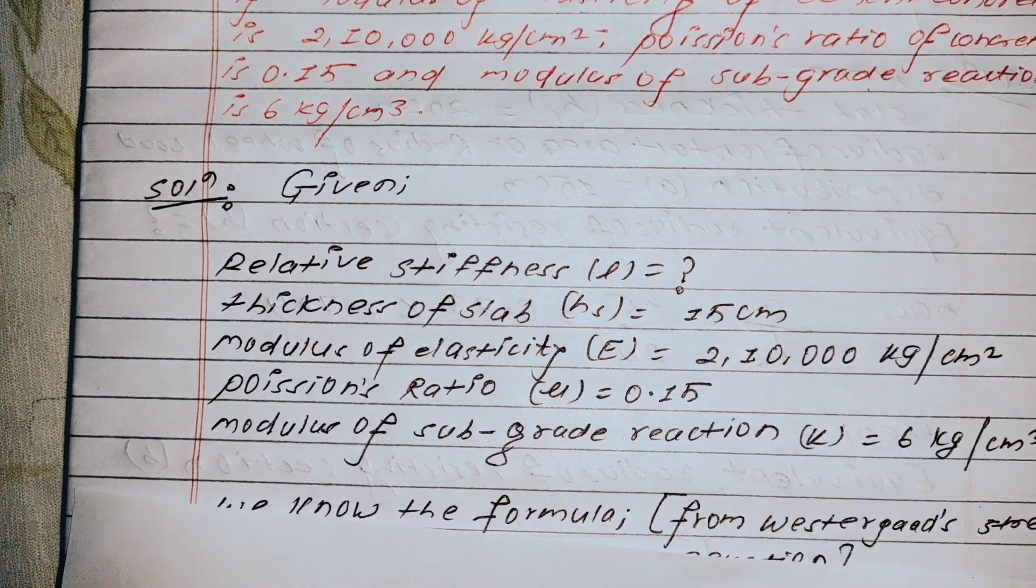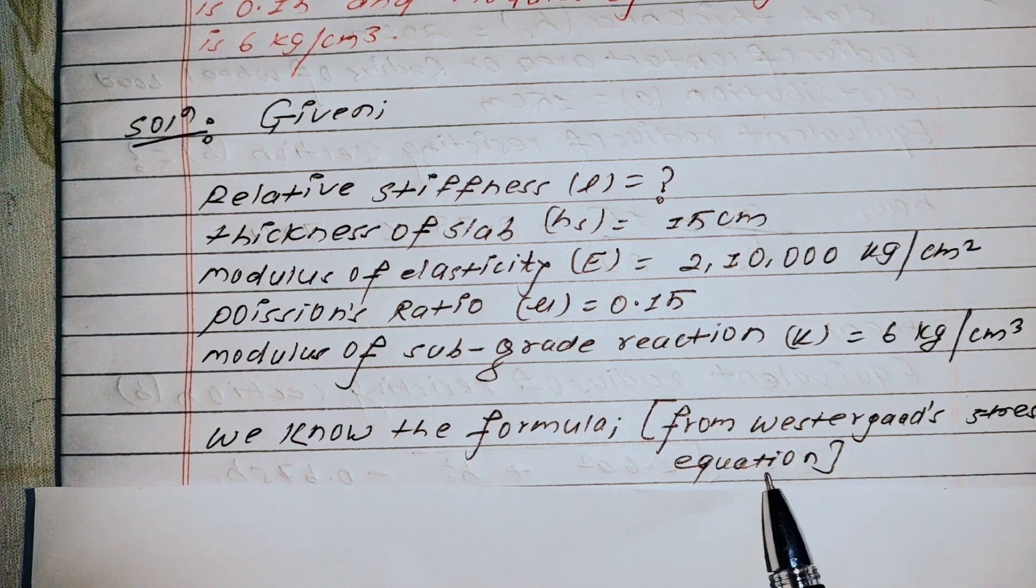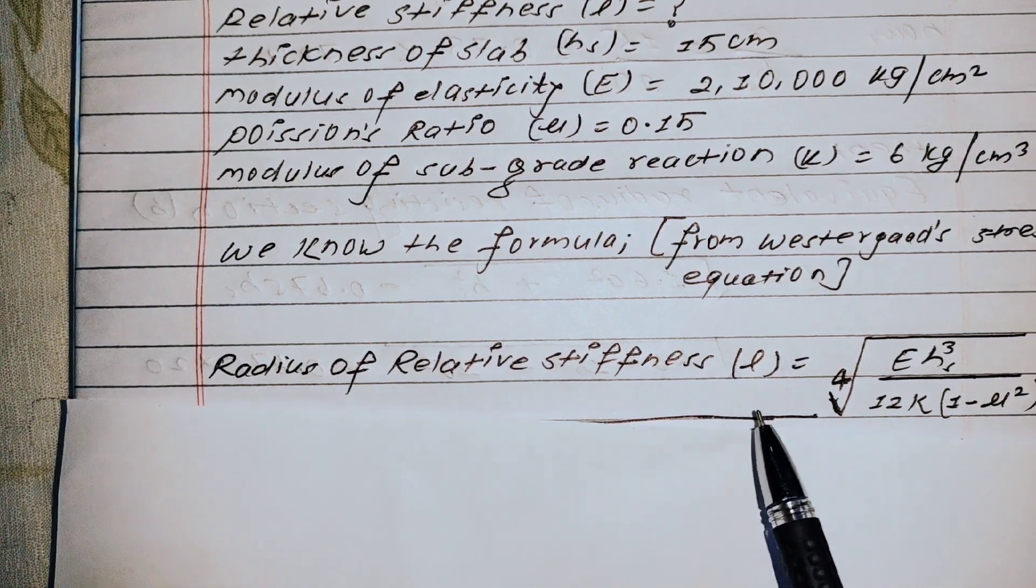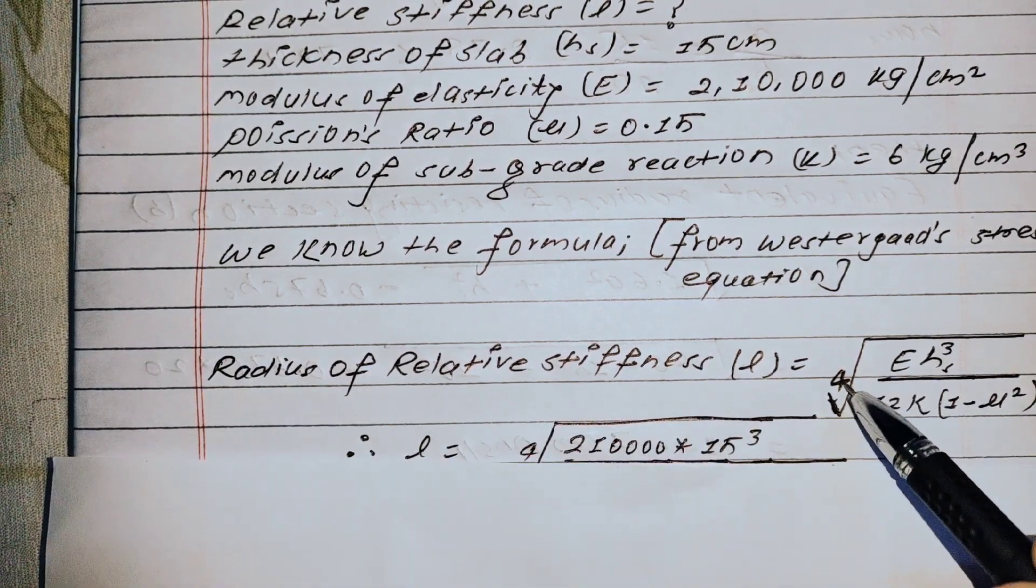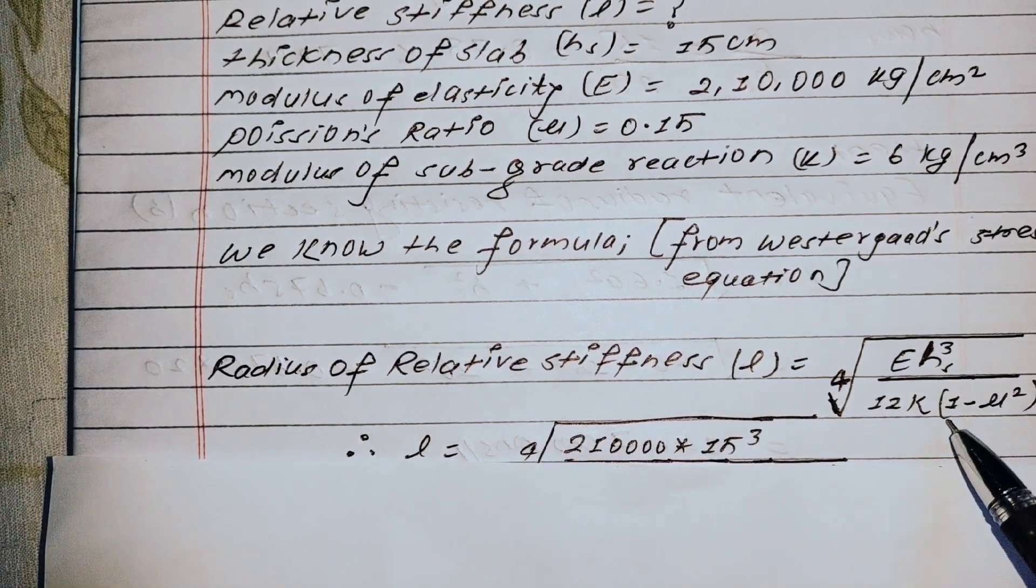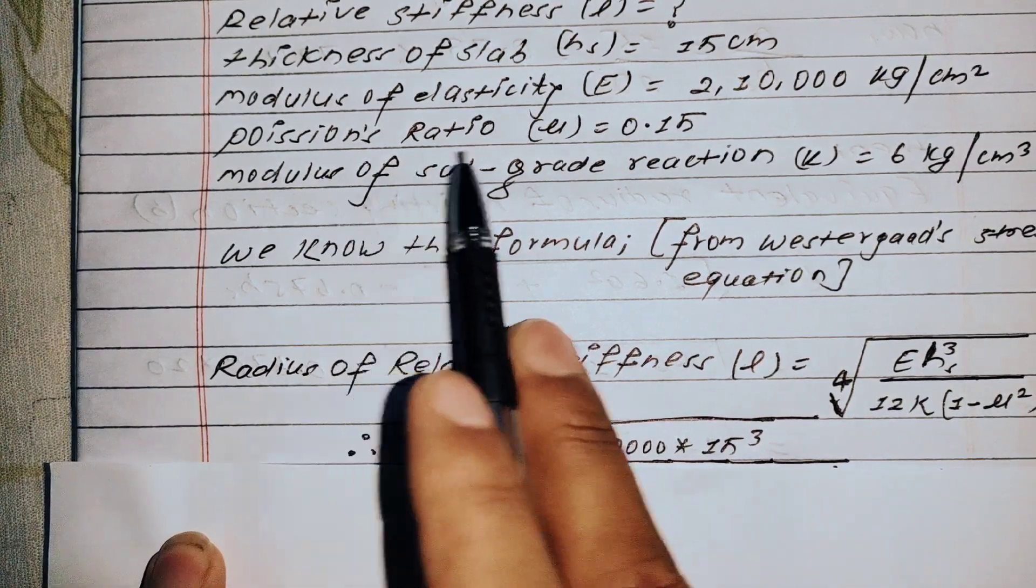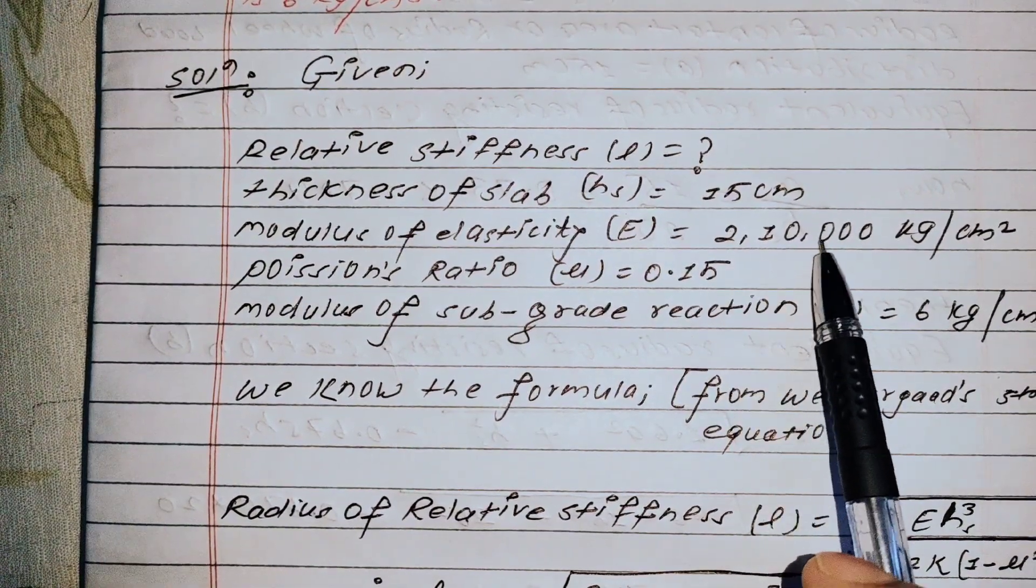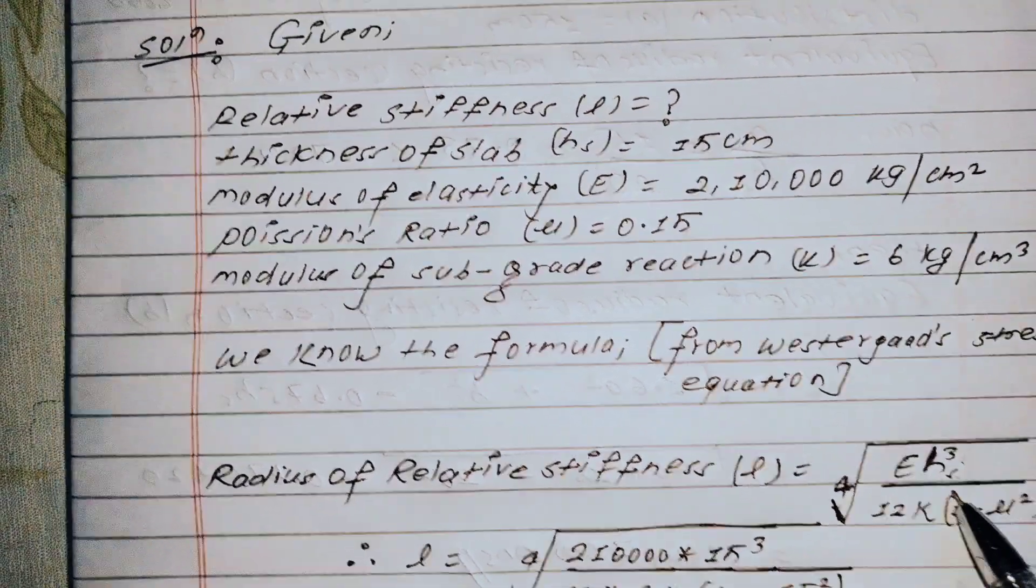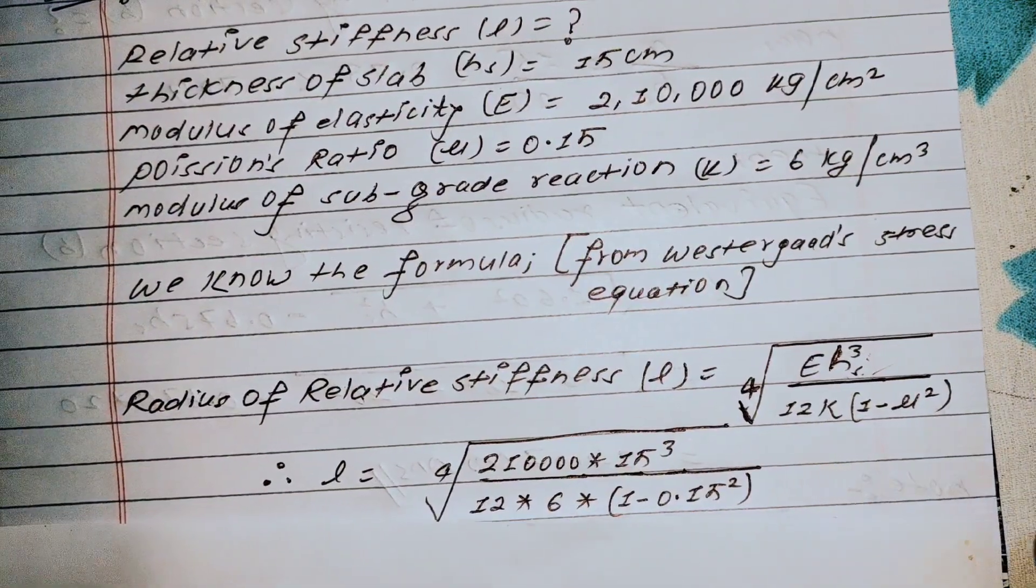We know the formula from Westergaard equation for rigid pavement. The radius of relative stiffness formula is: L = ⁴√[E×h³/(12K(1-μ²))], where E is modulus of elasticity, h is thickness of slab which is 15 centimeter.